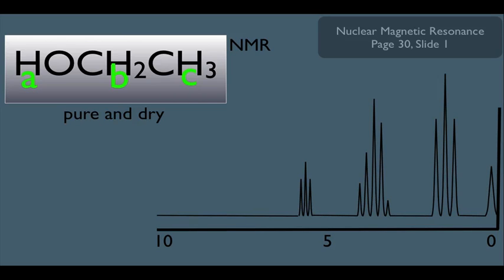The most shifted one, of course, should be the A-hydrogen because he's the closest to the oxygen. Then next up should be the B-hydrogens, and the least shifted should be the C-type hydrogens.